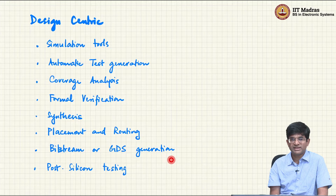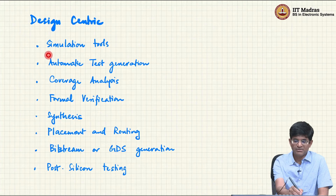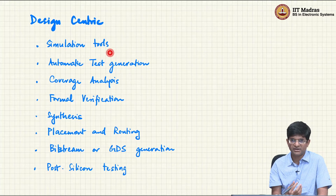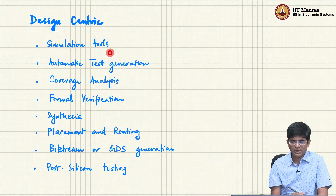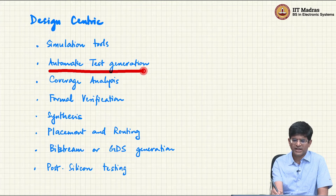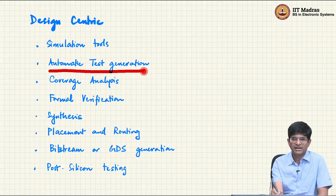On the other hand, there are also places where the human uses the tool primarily to help with the actual design process itself. Examples would be simulation tools, which apply the ideas of the language reference manual to interpret the various parts of the code and tell you whether or not the system is working in simulation the way you expect. Test suite generation is something humans need to think about, but once you have a basic design there is also the concept of automated test generation, which tries to automatically generate random, pseudo-random, or targeted test cases likely to identify certain kinds of problems.